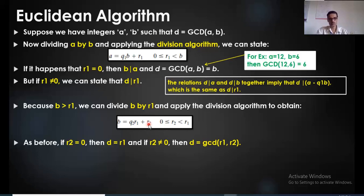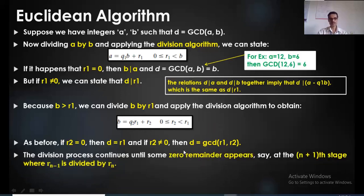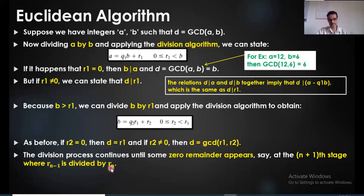If R2 is not equal to 0, we divide R1 by R2 to get R1 = Q3·R2 + R3. We continue this process until the remainder becomes 0. Assuming we reach the n+1 stage where we divide R(n−1) by Rn and get remainder equal to 0, the GCD is the previous remainder Rn. That is, whatever remainder you got at the nth stage is the GCD.